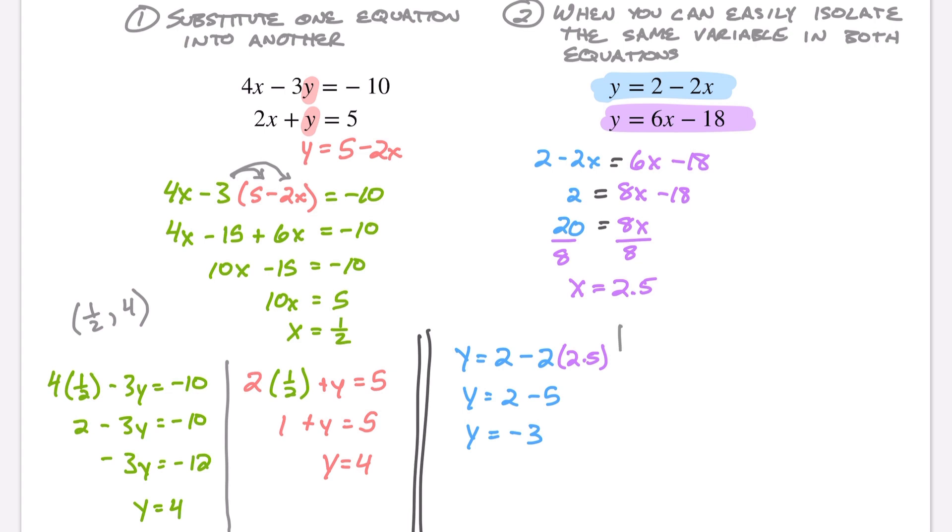If we want to put it into the purple equation, then we'll have y = 6(2.5) - 18. Y = 6 times 2.5 is 15 - 18, so y = -3. So here is the solution to this problem, 2.5 and -3.